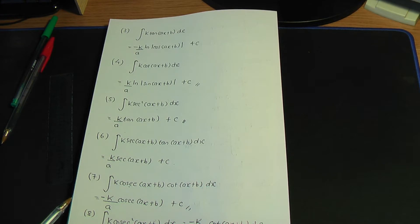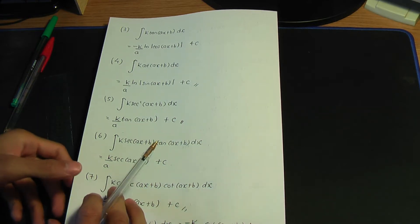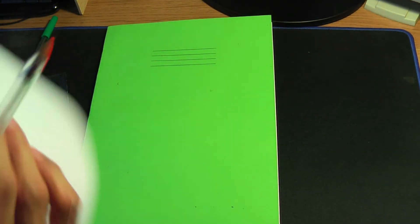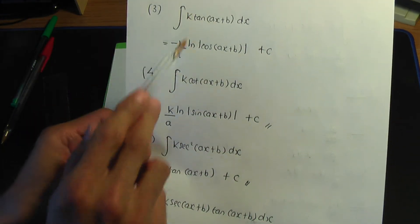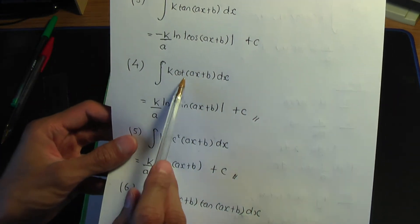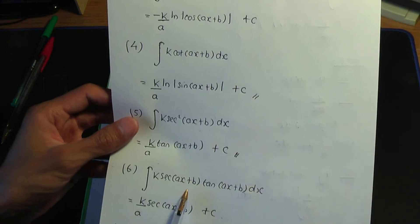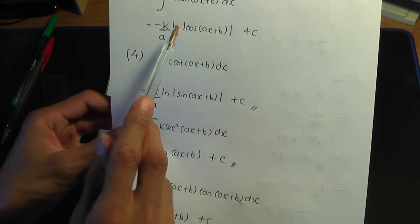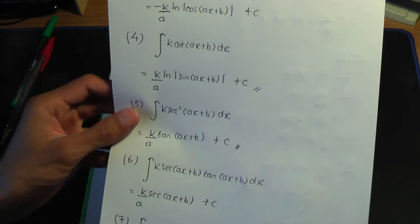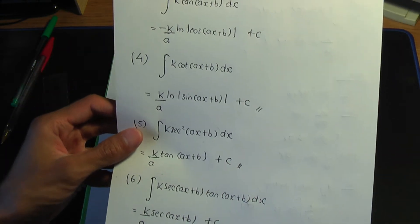Don't memorise results — learn what the result is trying to say. If you want to learn results, learn the standard results. Before we start the examples, I must stress that to apply these standard related results, k, a and b should be constants and the angles should be of the form ax + b.